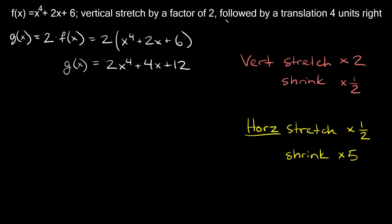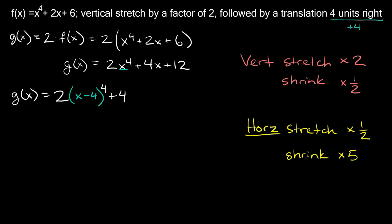Now the other transformation says followed by a translation four units to the right. Four units to the right, thinking of a number line, that would be in the positive direction — positive four. But we're going to put the opposite number, so negative four. Wherever we have an x, we're going to insert a set of parentheses and write x minus four. So g of x is equal to two times x minus four, raised to the fourth, plus four times x minus four, plus 12. So that would be your answer right there.